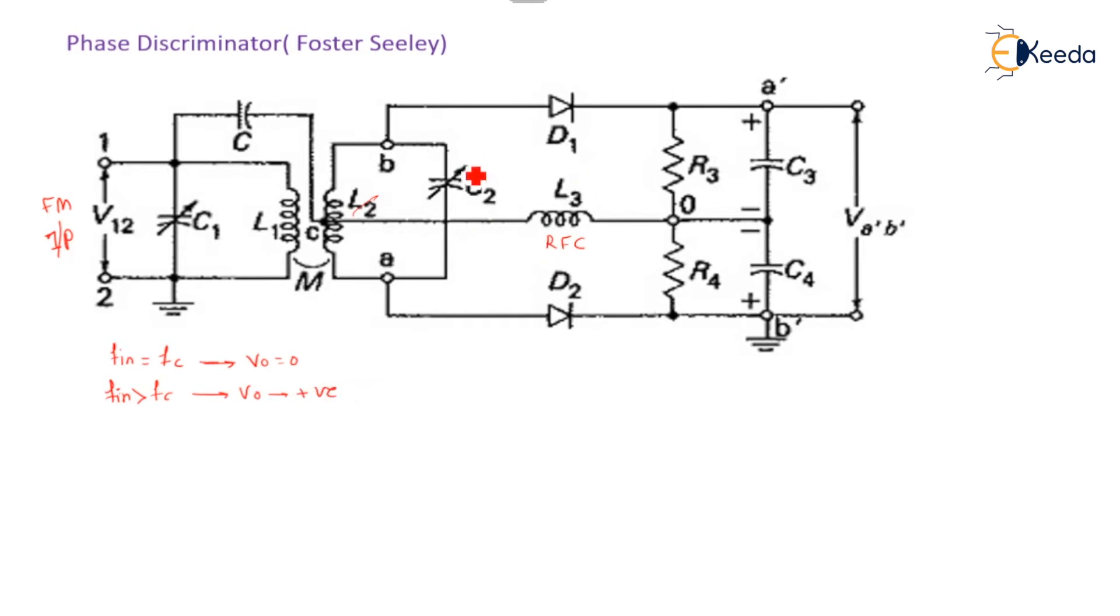Because the upper half voltage will be larger than that of the lower half voltage. Hence, output voltage will be marching towards the positive. And third case, when F_in is less than F_c, that time output voltage goes to the negative value.